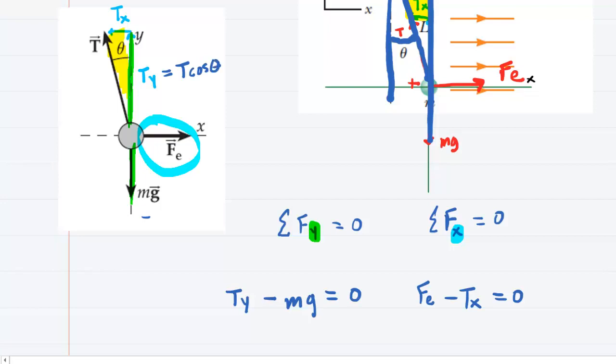And then the x component is opposite of that angle, and therefore we would use the sine to represent it. So we would have tension times the sine of the angle. So let's come down below and replace Ty with T cosine theta, and let's replace Tx with T sine of theta. So far, so good.